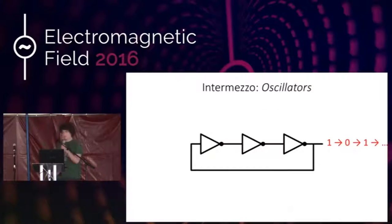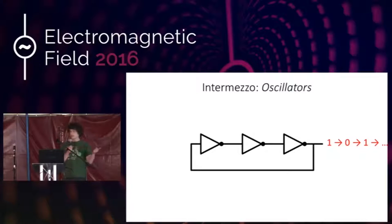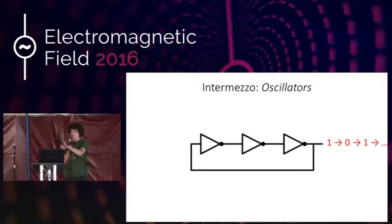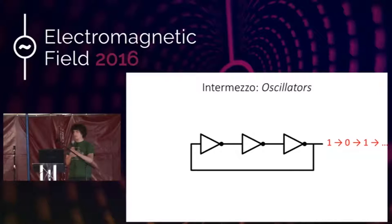A second problem is oscillations. The simplest form: take three inverters in a chain. Because there are three of them, this circuit has no stable state. If the leftmost point were 1, the next would be 0, the next would be 1, and the last inverter's output would be 0 — but that output is also the input of the first inverter, which we said was 1. So the circuit constantly changes every point from 0 to 1, from 0 to 1. Sometimes you want this — for example, to generate a clock signal — but if this is hidden somewhere deep in your circuit, all of your circuits will start changing randomly.